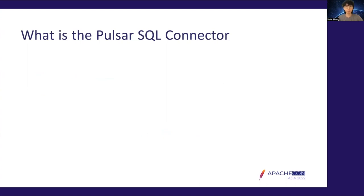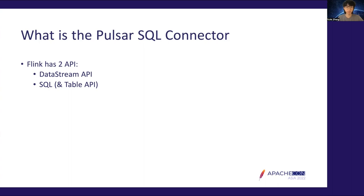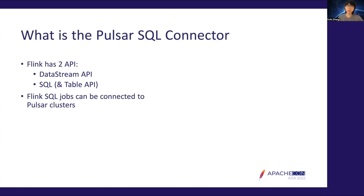Our first question is: what is a Pulsar SQL Connector? As we all know, Flink has two APIs. The first is called the Data Stream API, where users write Java or Scala code, package them into a jar with all the dependencies, and submit this jar onto a Flink cluster. The second API — SQL and the Table API — allows users to write simple SQL queries to express complicated Flink jobs. The Pulsar SQL Connector allows Flink SQL jobs to connect to Pulsar clusters and read from or write into Pulsar topics.